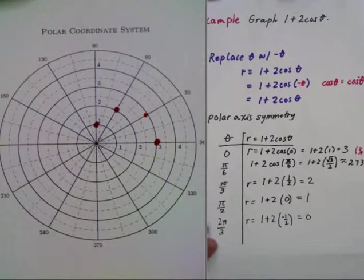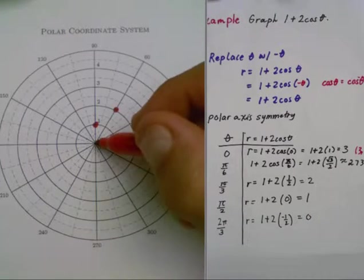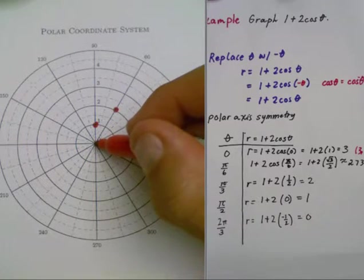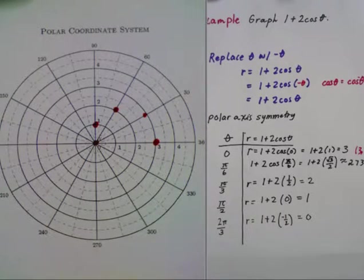We have zero on the radius. Since we're not going anywhere, it's going to be right at the pole, right there in the middle.